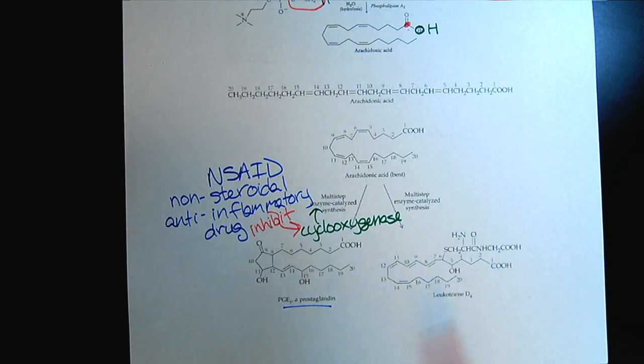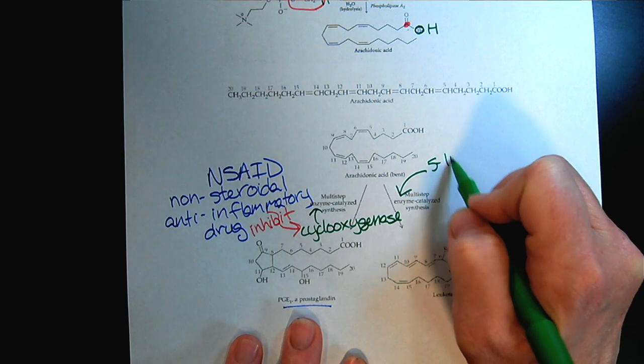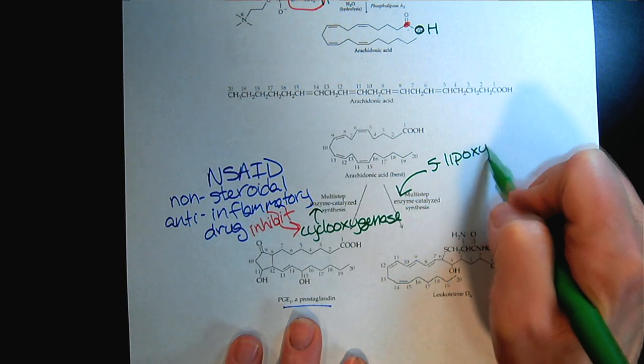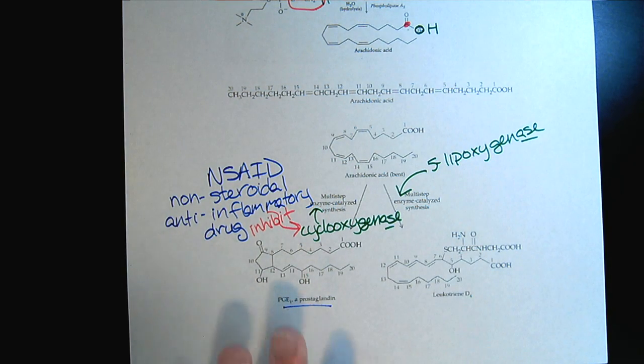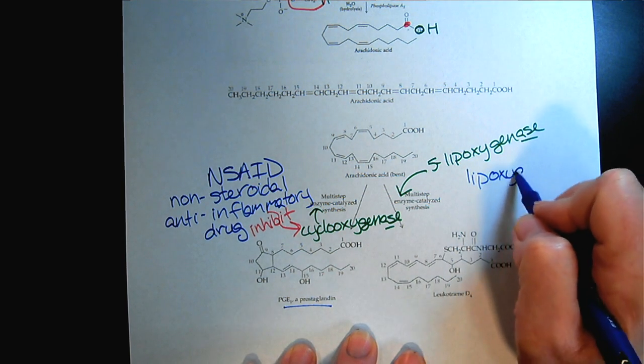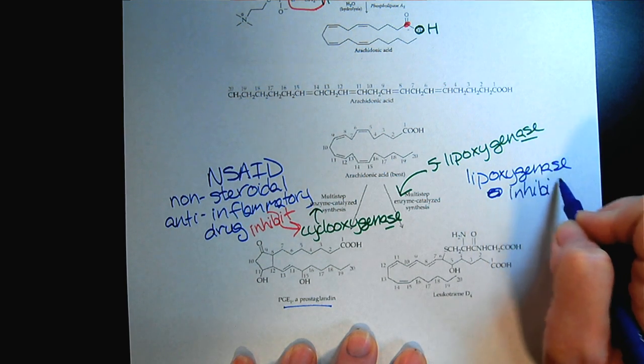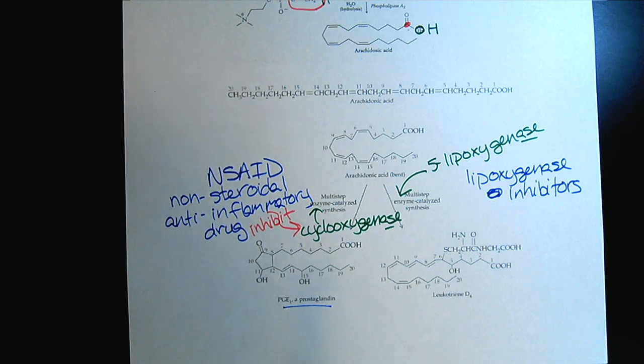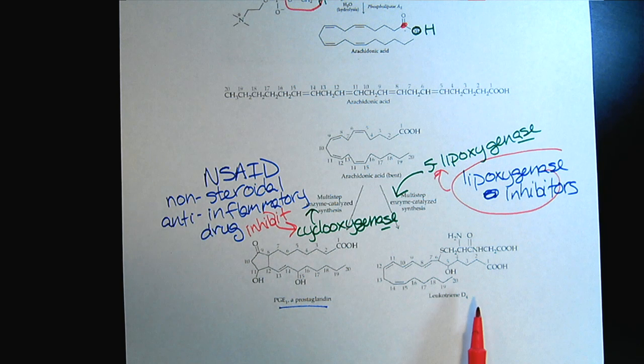For the leukotriene pathway, one of the major enzymes is 5-lipoxygenase, using the suffixes to recognize that they're enzymes. There's another class of drugs called lipoxygenase inhibitors. Both forms of drugs to prevent inflammation work by inhibiting the enzymes that would produce the biological molecule that triggers inflammation.